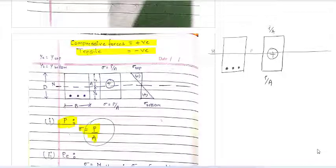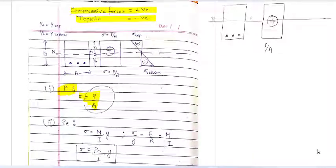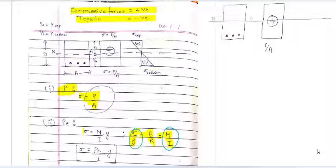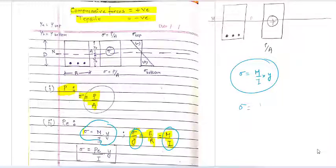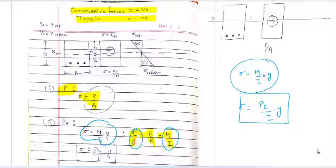Then comes the bending moment contribution. The bending stress is calculated using the bending equation from strength of materials: σ/Y = E/R = M/I, which gives σ = (M/I)×Y. Here M = P×E, and Y is the distance from the neutral fiber — Y_top for the top fiber and Y_bottom for the bottom fiber.